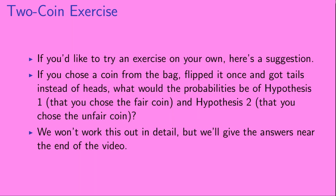If you'd like to try an exercise on your own, here's a suggestion. If you chose a coin from the bag, flipped it once, and got tails instead of heads, what would be the probabilities of hypothesis 1 — that you chose the fair coin — and hypothesis 2 — that you chose the unfair coin? We won't work this out in detail, but we'll give the answers near the end of the video.